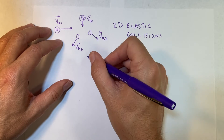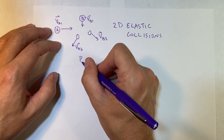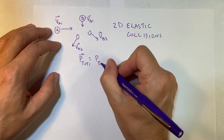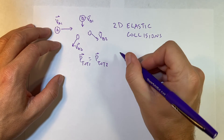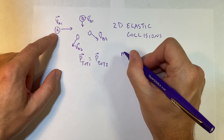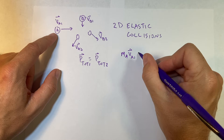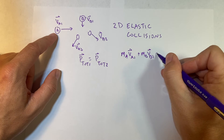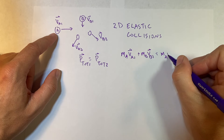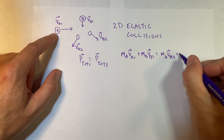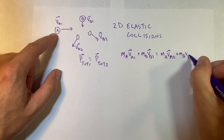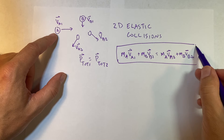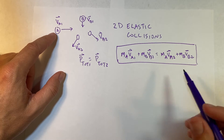This says that p-total-1 equals p-total-2, so I can write: m_a times v_a1 (which is a vector) plus m_b times v_b1 equals m_a times v_a2 plus m_b times v_b2. I'm going to leave it right there — that's one equation.